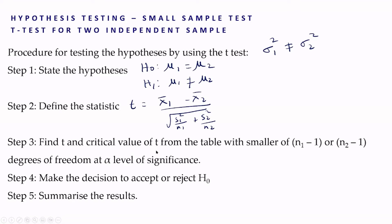We compare the critical value of t with the calculated value of t and accordingly make the decision to accept or reject H0. Finally, we summarize the results based on what is asked. These are the steps for hypothesis testing using the t-test for two independent samples when the population variances are assumed to be unequal.